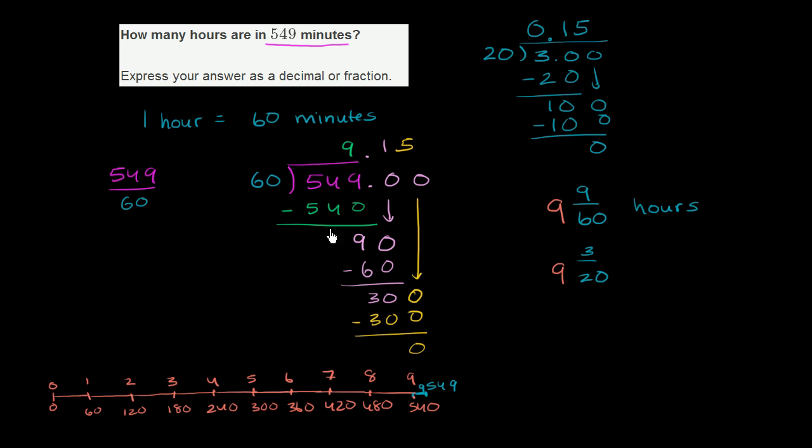So notice, 3 over 20 is the exact same thing. So 9 and 3/20ths is the exact same thing as 9 and 15 hundredths. 9 and 15 hundredths. These are all equivalent answers.